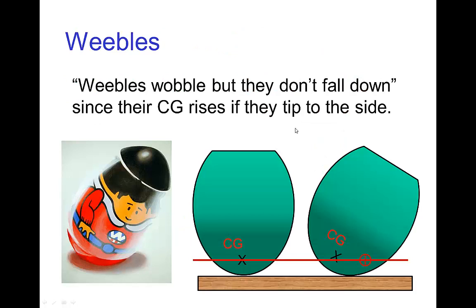Weebles are a child's toy, and the slogan goes: Weebles wobble but they don't fall down. They don't fall down because they are weighted such that the center of gravity for a Weeble is very low. If a Weeble was to tip over, that would actually have to cause the center of gravity to go up, so they're very stable in the upright position.